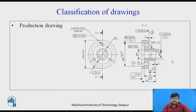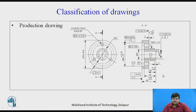Next we have production drawing. In production drawing, certain additional elements are added — geometric tolerance, surface roughness, and certain tolerances. This drawing is given to the production unit with all manufacturing details. You can see the machining symbol, what kind of machining is required and to what allowance it needs to be machined. Every manufacturing detail is mentioned on this, so this is called production drawing.